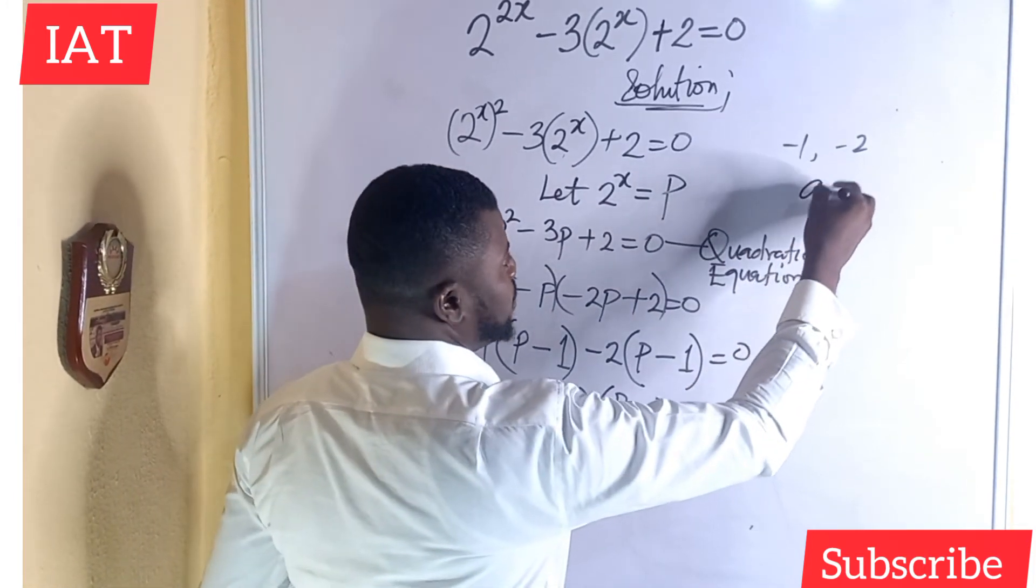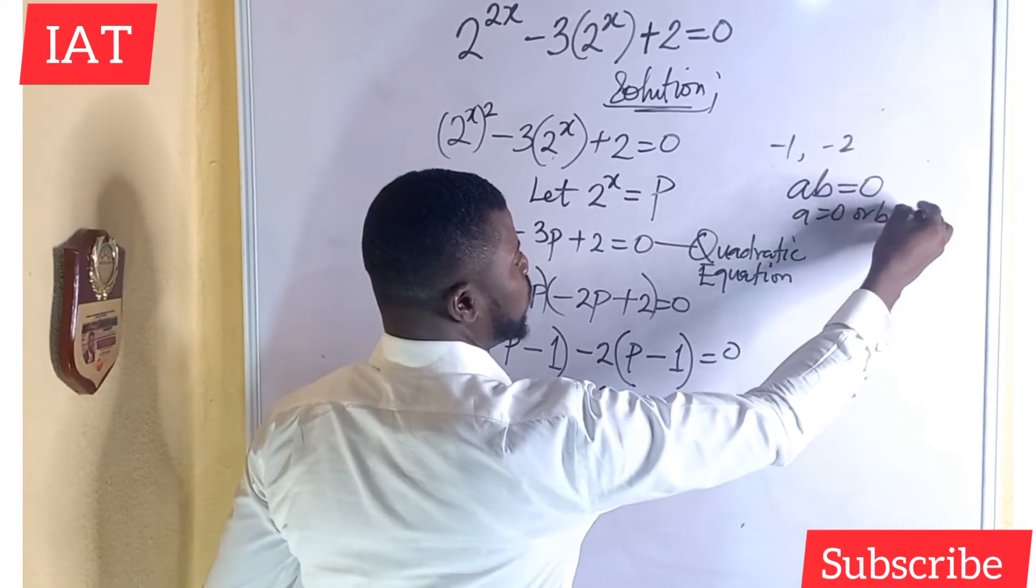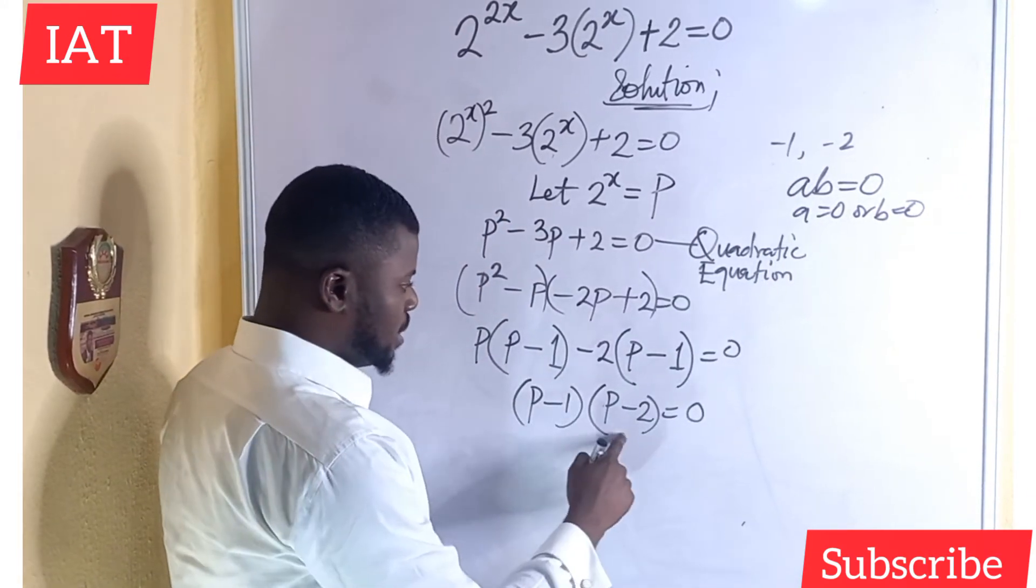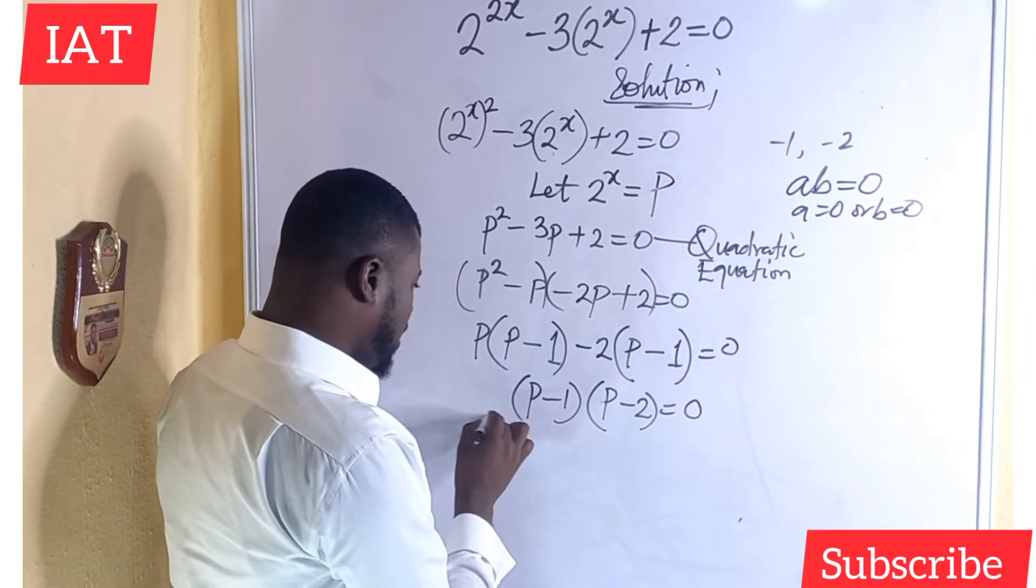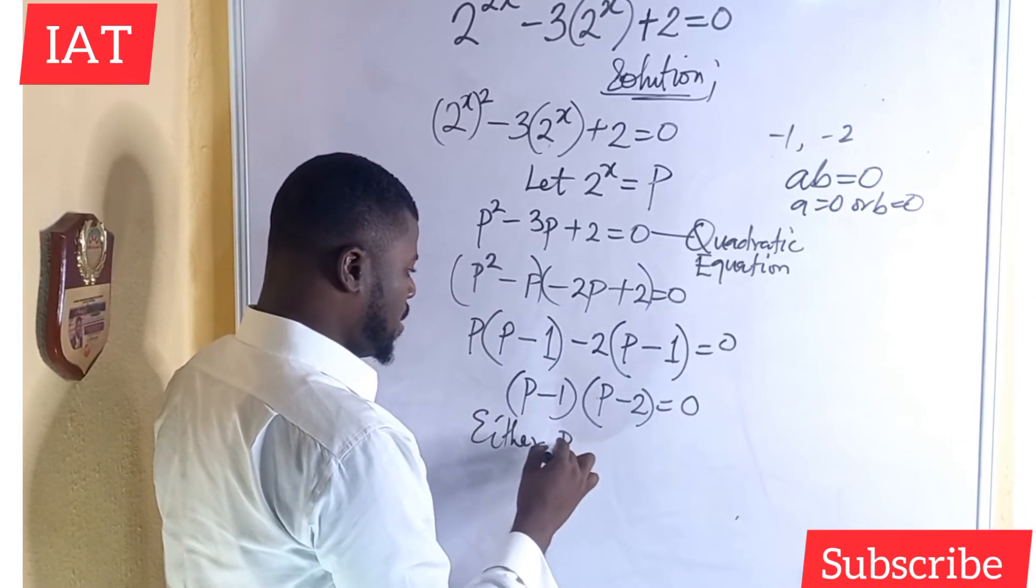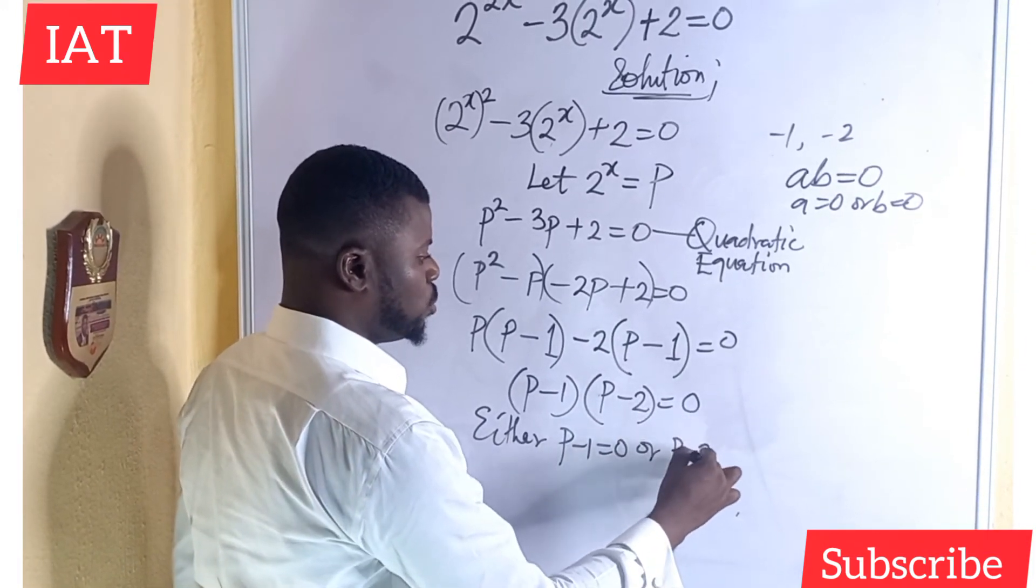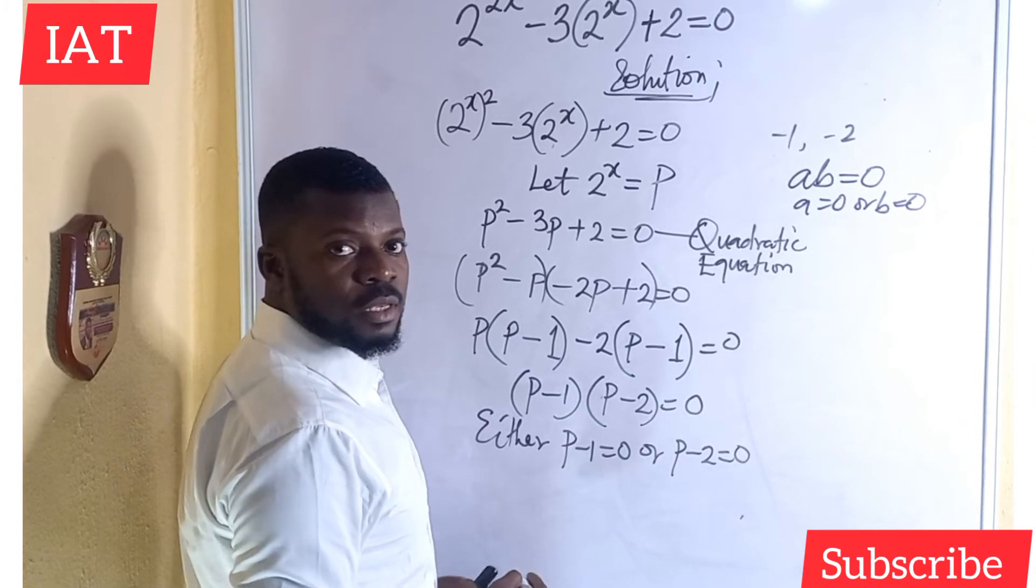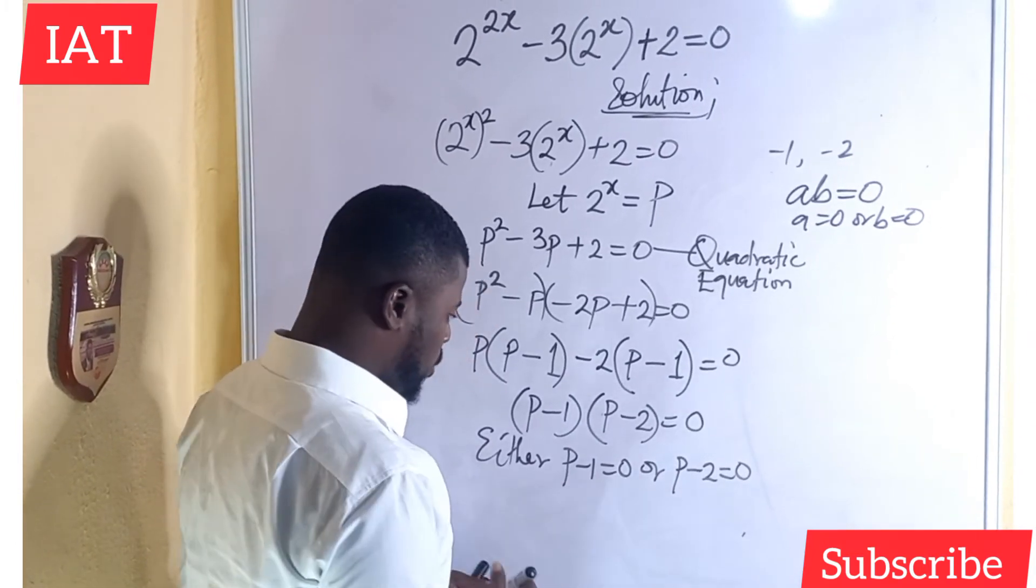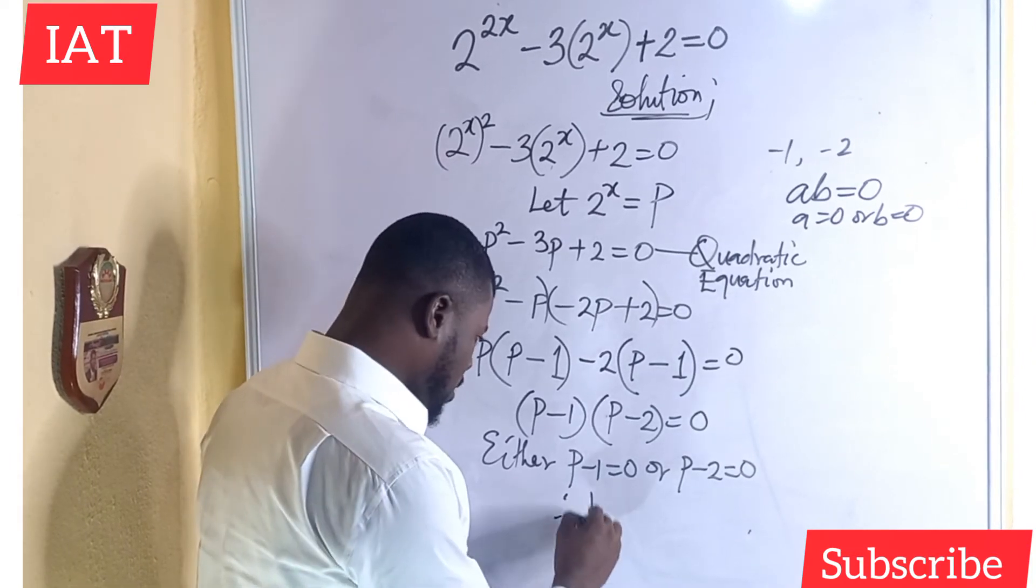What is the next point? According to this expression, if I have ab equal to 0, it's either a is equal to 0 or b is equal to 0. So if I have this, this equal to 0, it's either p minus 1 is equal to 0 or p minus 2 equal to 0. So if p minus 1 is equal to 0,